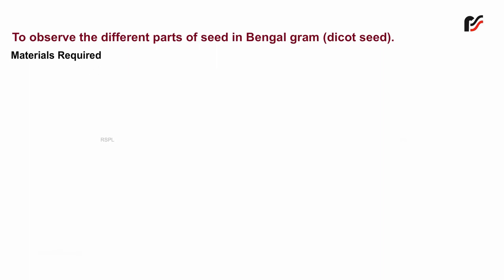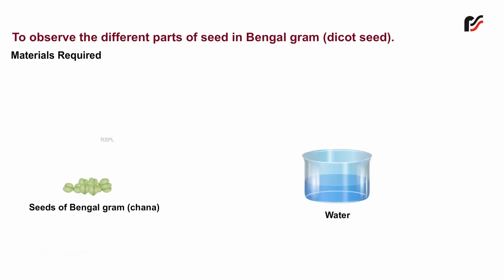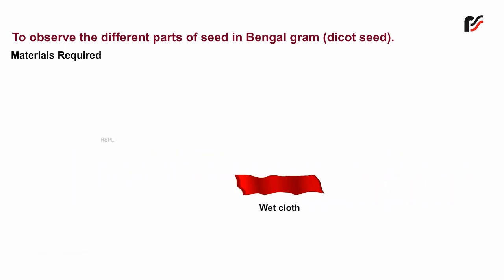Material required: seeds of Bengal gram (chana), water, bowl, and wet cloth.